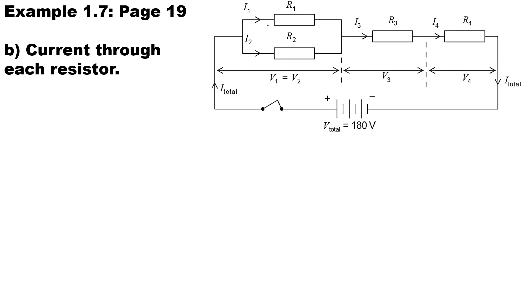In part B of example 1.7, we're going to be calculating the current through each branch. It's important to note that the total current is equal to I1 plus I2, and the total current is equal to I3 and also equal to I4. To calculate the total current, we use Ohm's Law — current is directly proportional to voltage but inversely proportional to resistance.